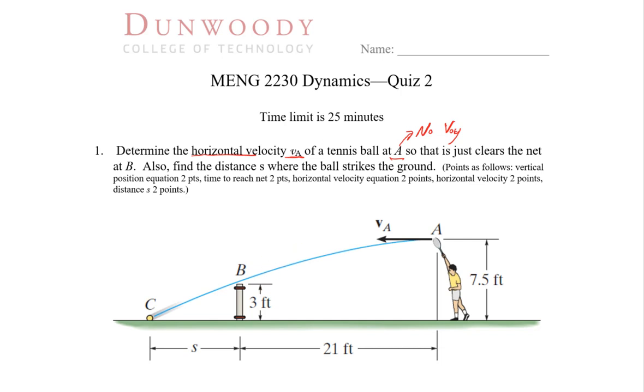And we need to find that horizontal velocity as well as how far the ball goes after it clears the net. And then I've added a rubric here, so we need a vertical position equation. That will get us two points. The time to reach the net is two points.